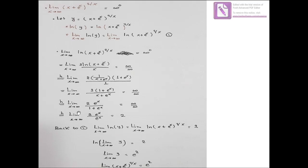So we apply L'Hôpital's rule for the third time. The derivative of 2e^x is 2e^x, and the derivative of (1 + e^x) is e^x. We can cancel e^x with e^x, leaving just 2. So the value of the limit of this part is equal to 2.